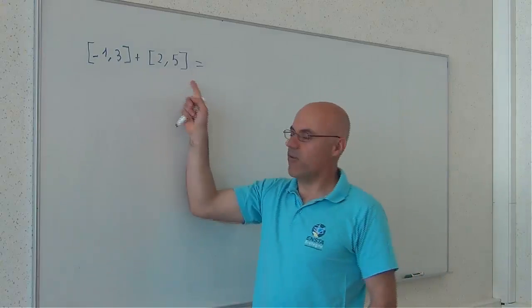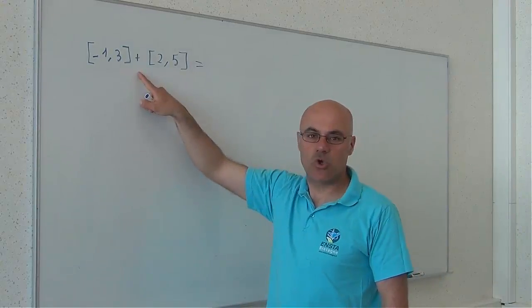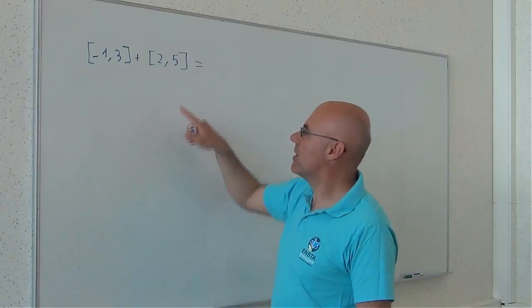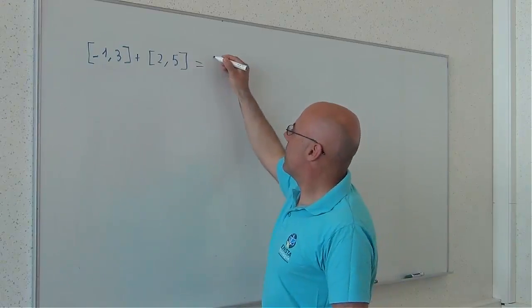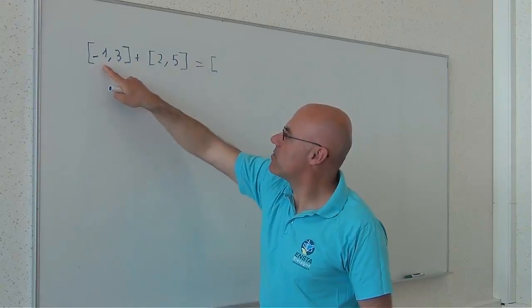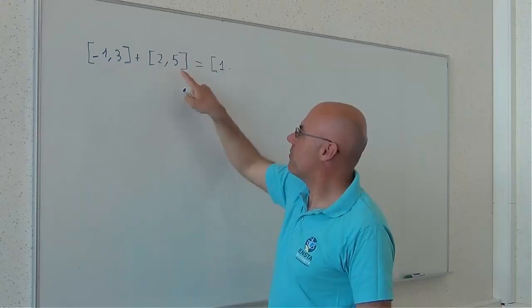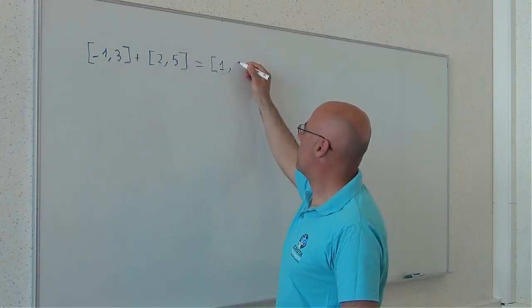I consider these two intervals and I will now show how to add them. I will apply the previous rule. So, minus 1 plus 2 corresponds to 1, 3 plus 5 corresponds to n.